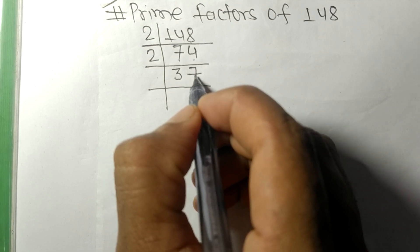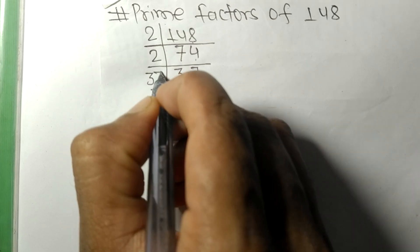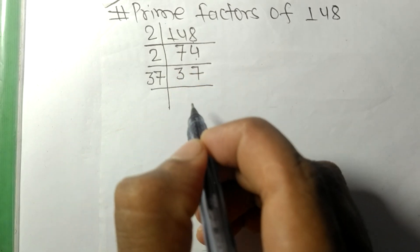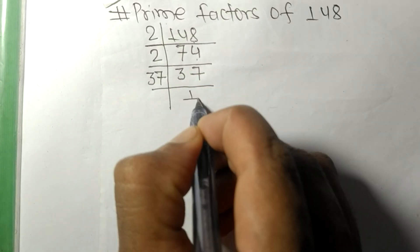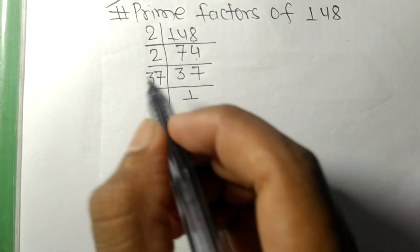37 is a prime number, so 37 is divisible by 37 itself and we get 1. So 148 is equal to...